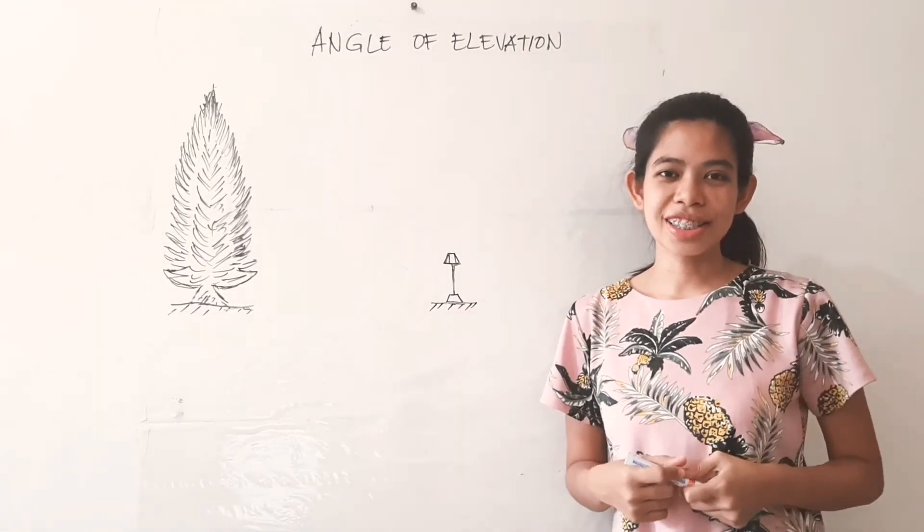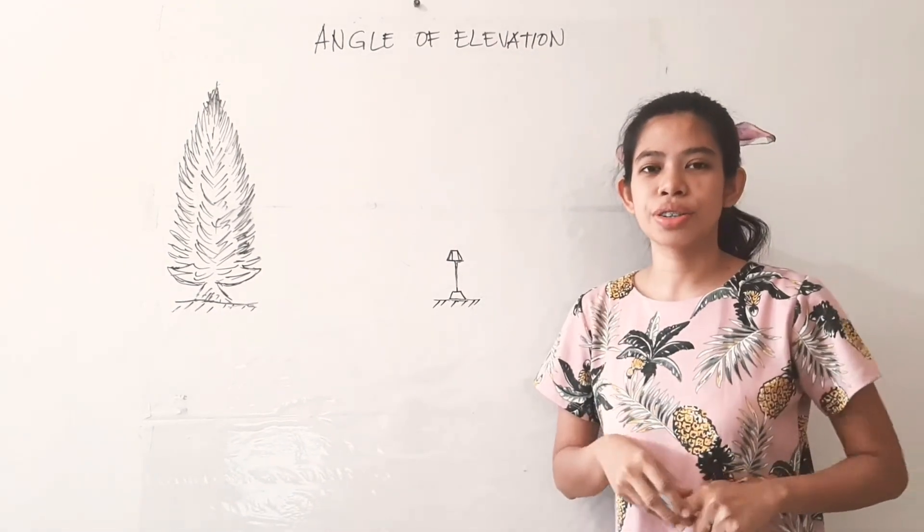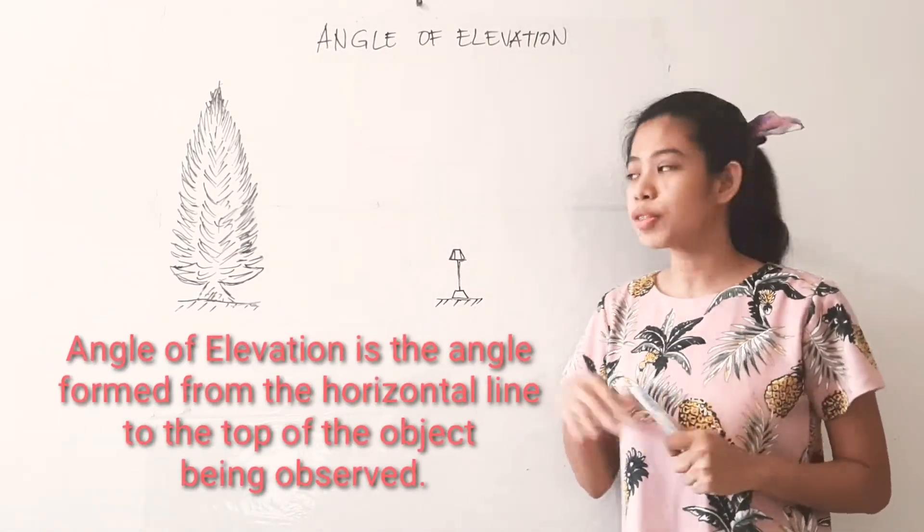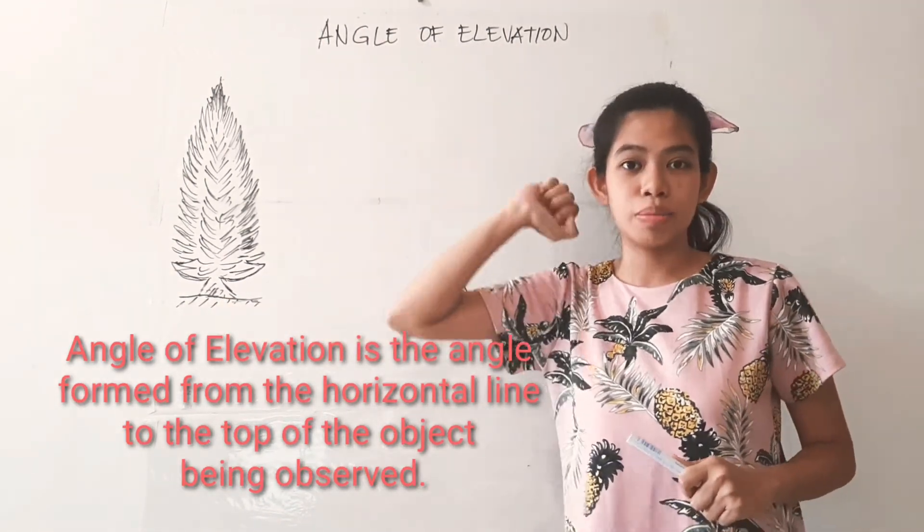All right, so let us start the discussion about angle of elevation. So what is an angle of elevation? It is an angle formed from the horizontal line to the top of the object being observed.